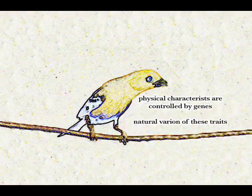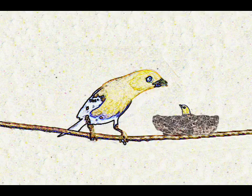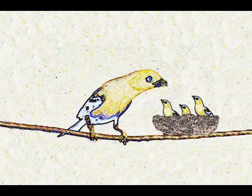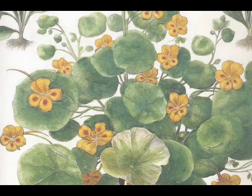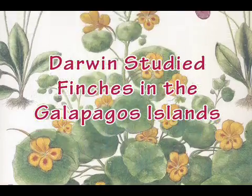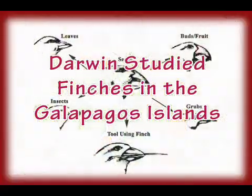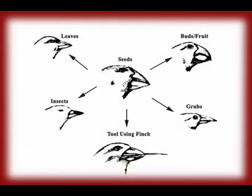Darwin correctly inferred that the physical characteristics of organisms are controlled by heritable factors, later called genes. He also understood that there exists natural variation in each of these traits. From these two inferences, Darwin formed the first concept of his evolutionary theory: the idea that organisms that are best fit for a particular environment will leave the most offspring. If, however, the environment changes, organisms that possess variations of the original favored traits may be more fit in the altered environment, be selected for, and leave more offspring than the original form.